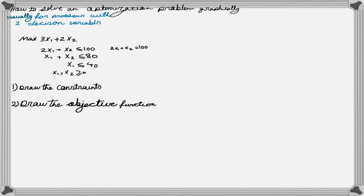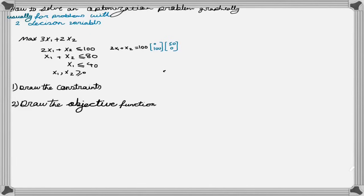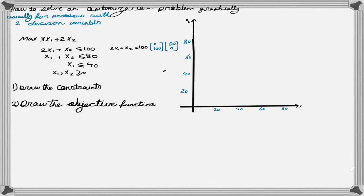For this line, if I put x1 equal to 0, then x2 will be equal to 100. And if I put x2 equal to 0, then x1 will be equal to 50. Having these two points, I am able to draw a line represented by these two points. If I find the two points and then connect them, I am able to draw this line.